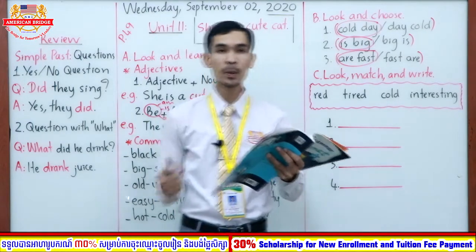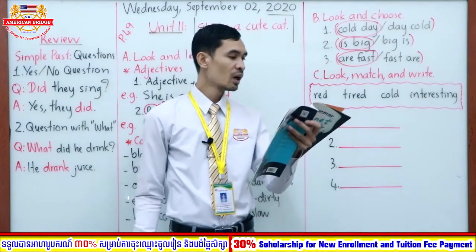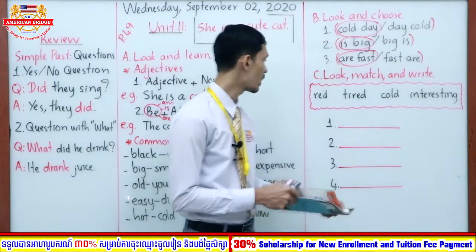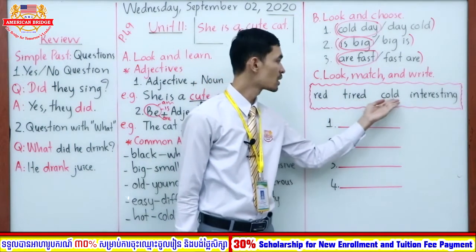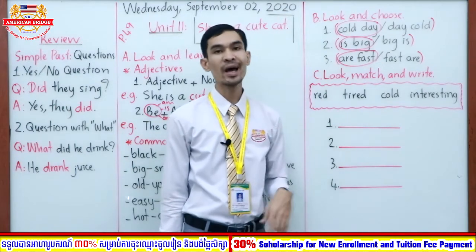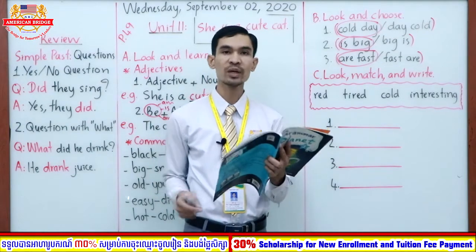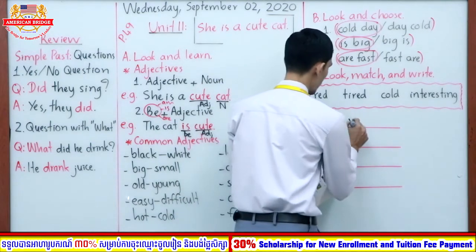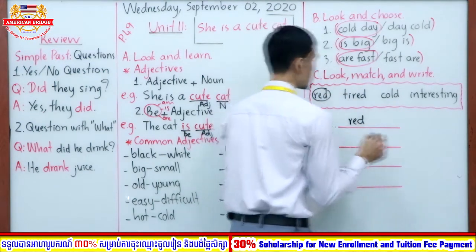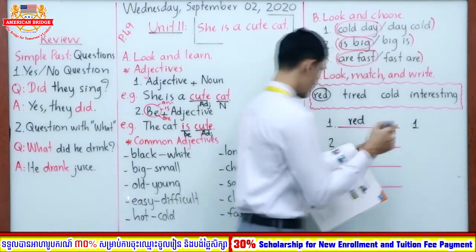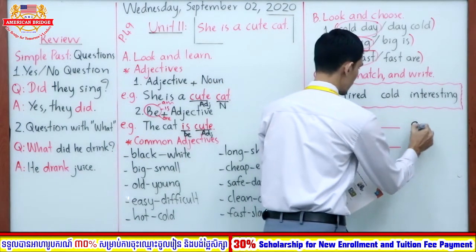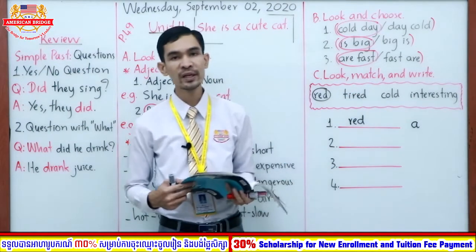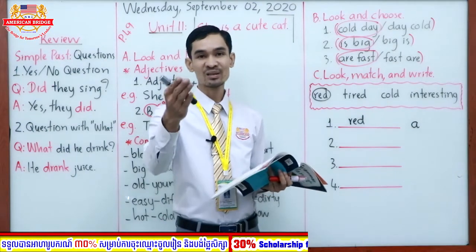Let's continue to page 50. Look, match, and write — use the words in the box. We have four words: red, tired, cold, interesting. All of these words are adjectives. Number one is given as an example: 'The snowman has a red head' — so number one is 'red,' matched to letter A. Now complete numbers two, three, and four and I will correct them for you.